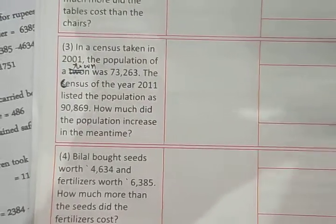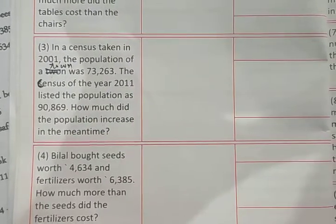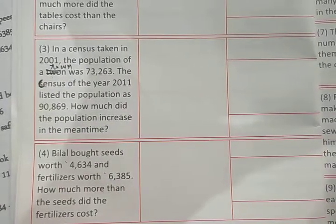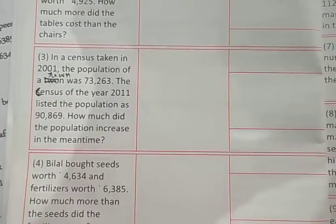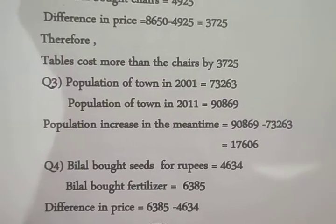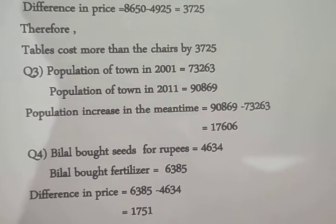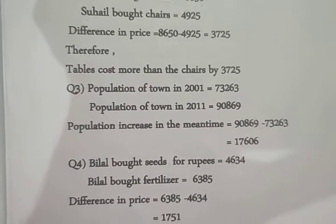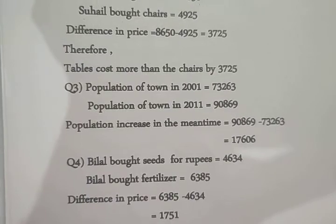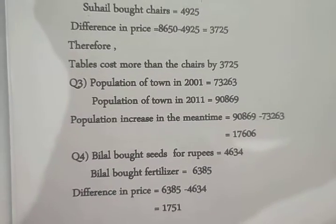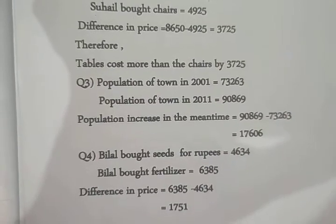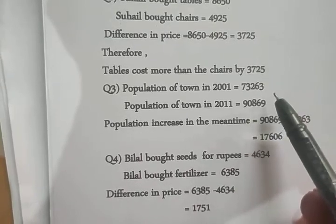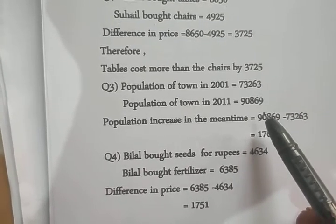Also note the spelling of 'census' is incorrect in the book. The census of the year 2011 listed the population as 90869. How much did the population increase in the meantime? Given: the population of town in 2001 is 73263 and the population of town in 2011 is 90869. The population increase is the difference of 90869 and 73263.